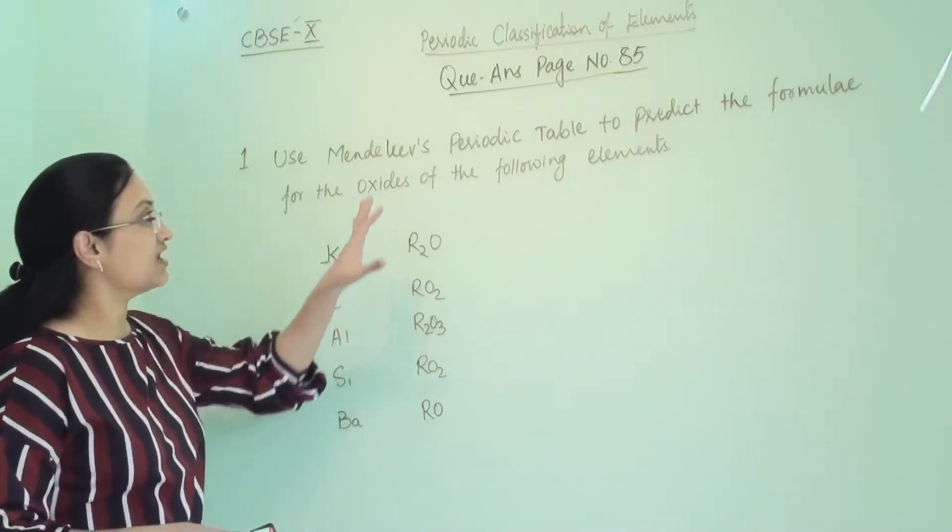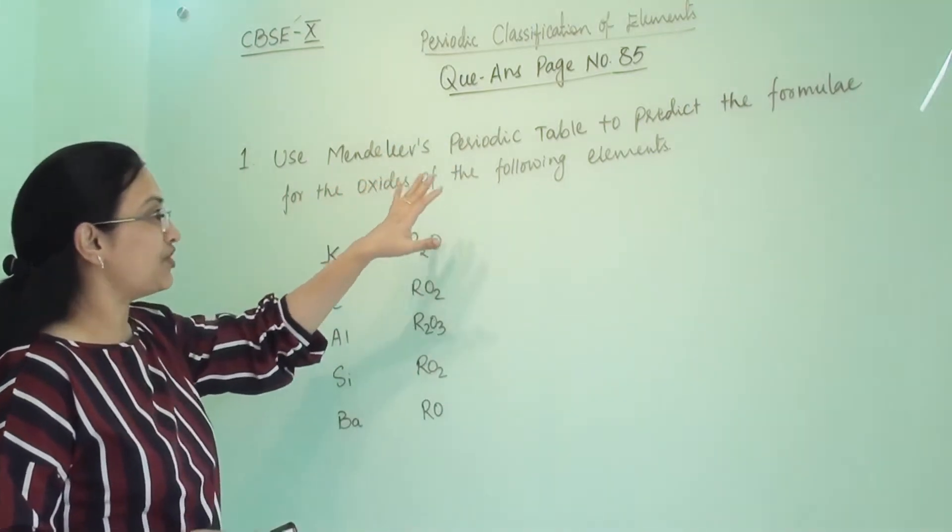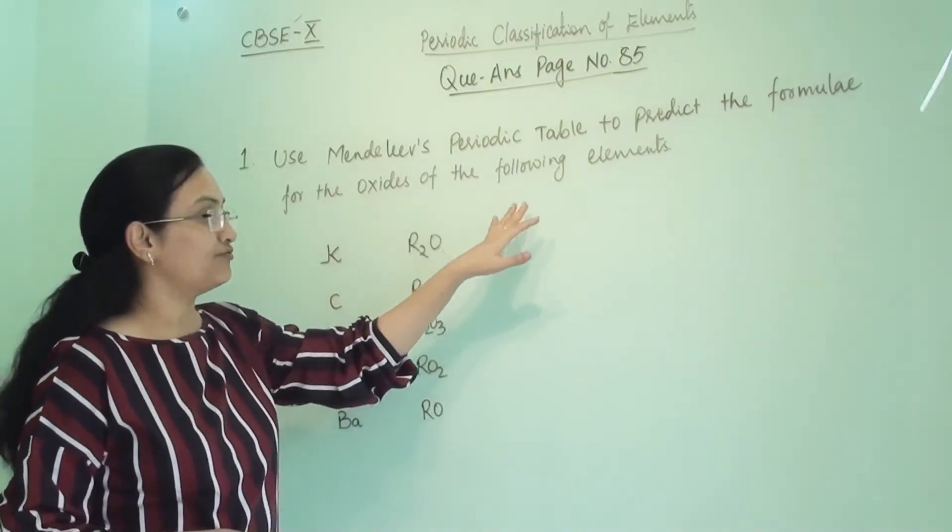These questions are from page number 85. The first question is: Use Mendeleev's periodic table to predict the formula for the oxides of the following elements.